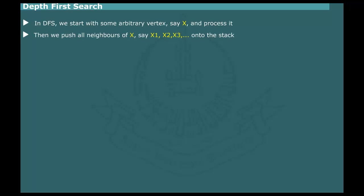Then, we push all neighbors of x, say x1, x2, x3, onto the stack. We pop the stack to process x1 and push all neighbors of x1, say x11, x12, x13, onto the stack.